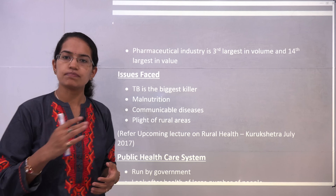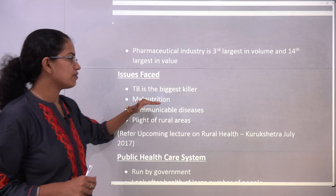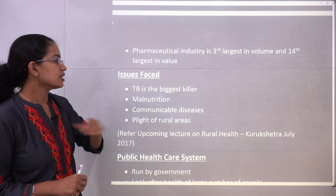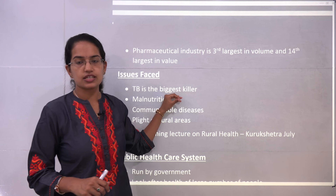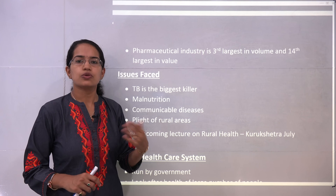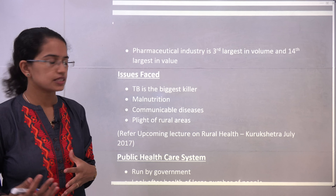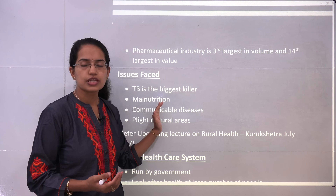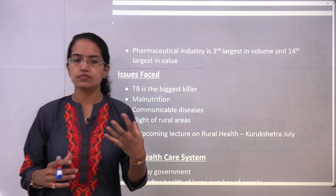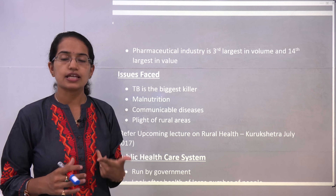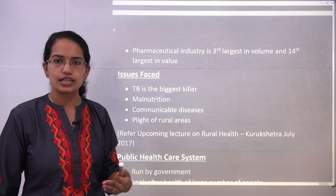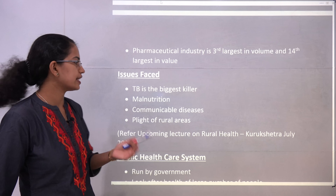However, despite these positives, there are negative points. India has a high number of communicable diseases, a large number of malnutrition or undernourished cases, and tuberculosis is widely prevalent — considered one of the largest killers in India. The state in rural India lacks adequate infrastructure and healthcare facilities. Diseases like dengue, chikungunya, and malaria are all due to issues of cleanliness. If the environment is clean with less water collection, there would be less mosquito breeding and fewer such diseases.